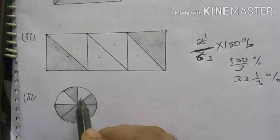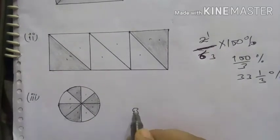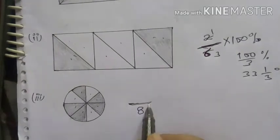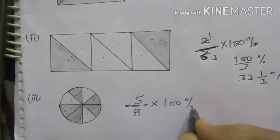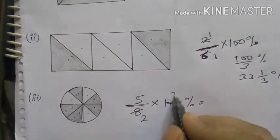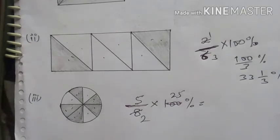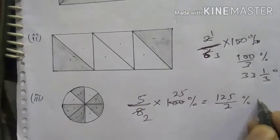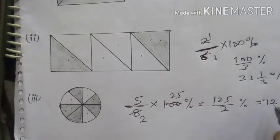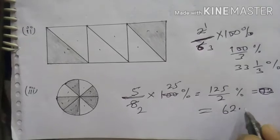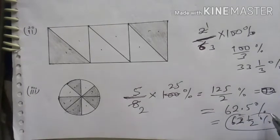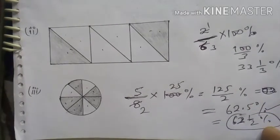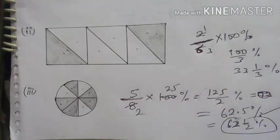For the third part: 5 upon 8 multiplied by 100 percent — cancel 4 from 8 and 100 — gives 125 upon 2 percent. This equals 62.5% or 62½% as a mixed fraction. Both are correct; the improper fraction form is also acceptable. Now move to the next question.